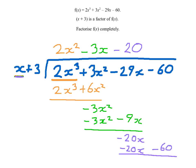Minus 60 minus minus 60, that's minus 60 plus 60. So there is no remainder. Indeed, x plus 3 is a factor of f of x. And to make this polynomial, I could take x plus 3 and times it by 2x squared minus 3x minus 20. And that is algebraic division.